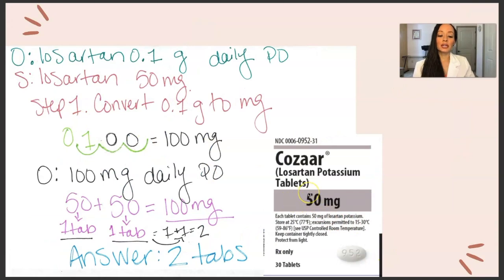Next, we have Cozaar, Losartan. This is an ARB and it helps with blood pressure, angiotensin receptor blocker. So with the Losartan, we have 0.1 grams daily orally. The supply is Losartan 50 milligrams. Again, we're moving from grams to a smaller unit. So the number needs to, we need to move to the right. We're going down to the right. We're moving the decimal point to the right. So step one, convert 0.1 grams to milligrams. So 0.1, 1, 2, 3, add the zero. That's 100 milligrams.